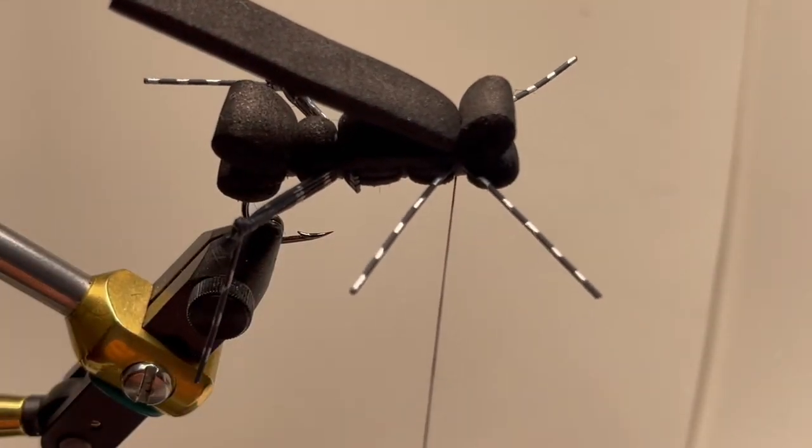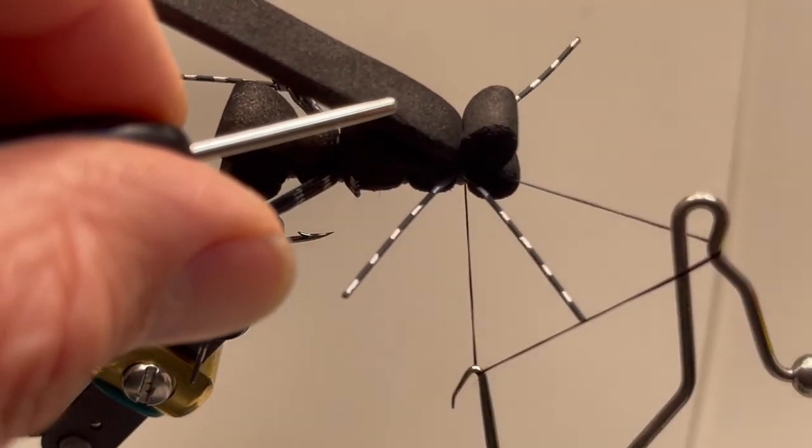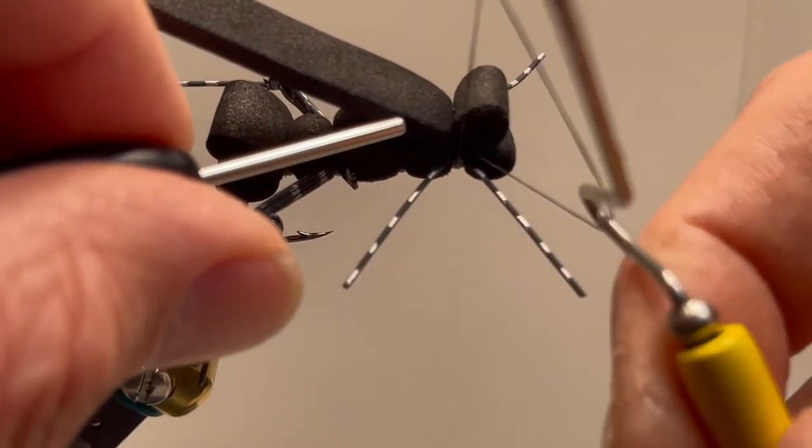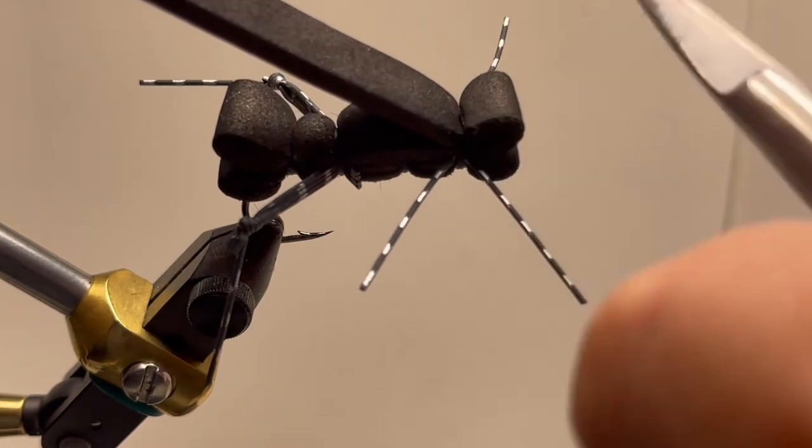And then we're going to whip finish. Big wraps around so you don't grab the eye down. And set that. Secure off excess.